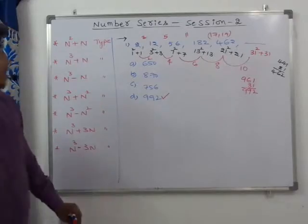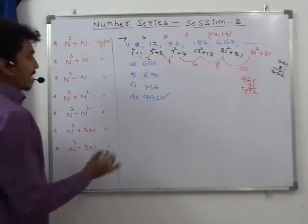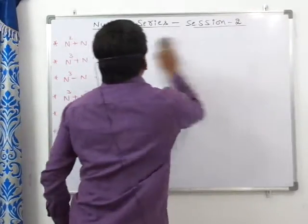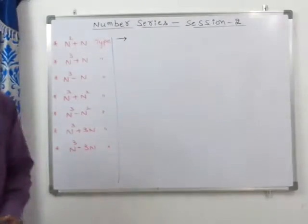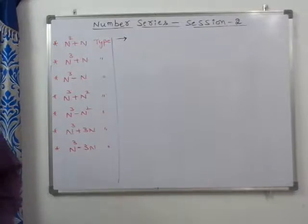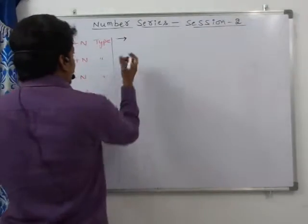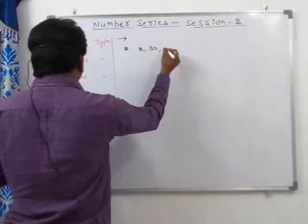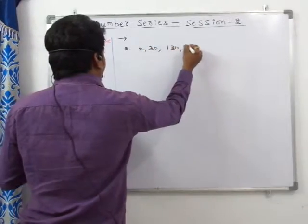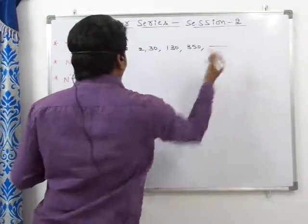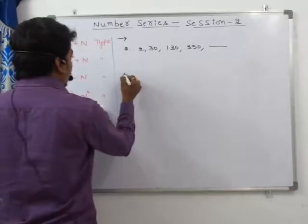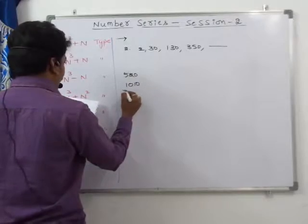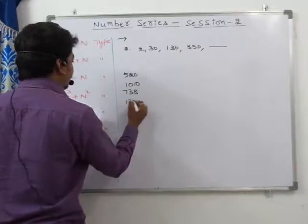Next we will see an example for the second type: the N³ + N series. Question number 2: the series is 2, 30, 130, 350 — what is the missing number? Options are 520, 1010, 738, and 1342.